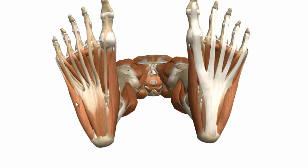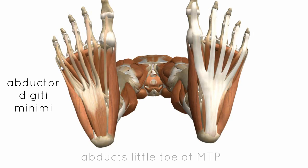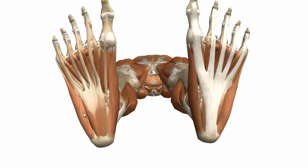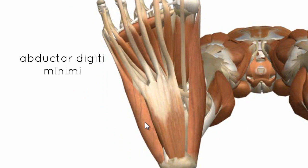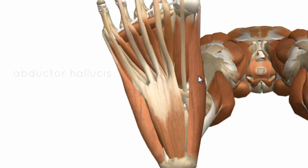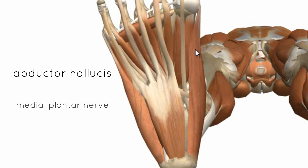The third muscle of the first layer is the abductor digiti minimi, which sits laterally and abducts the little toe at the MTP joint. It originates on the medial and lateral process of the calcaneal tuberosity — a quite large origin — then runs forward to insert at the base of the proximal phalanx laterally, bringing the little toe away from the midline. The abductor digiti minimi is innervated by the lateral plantar nerve, and the abductor hallucis by the medial plantar nerve.